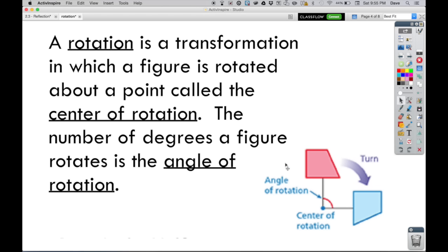So if you take a look down at our picture down here, you can see the original trapezoid here in red, and it's being rotated around this point here, the center of rotation, and it looks like they're going clockwise, looks like about 90 degrees, but whatever that degree is down here, that's the angle of rotation.